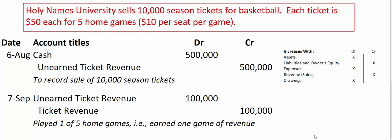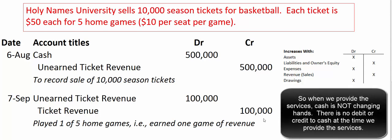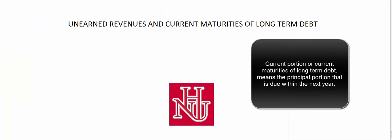As we provide the entertainment — as we play those basketball games — we convert that liability into revenue. When we play our first game, that's worth $100,000 (10,000 seats times $10 a seat), so we reduce the liability by $100,000 and book ticket revenue of $100,000. We got paid back in August, but now we've finally provided the service, so we get to book the revenue on our income statement. That's all there is to unearned revenue: reduce the liability account and book the revenue when the service is provided.